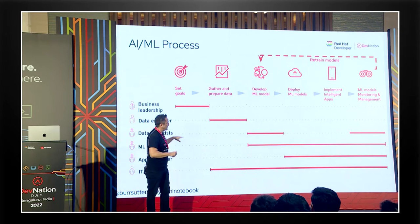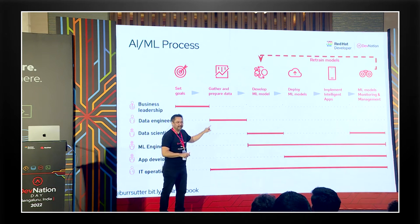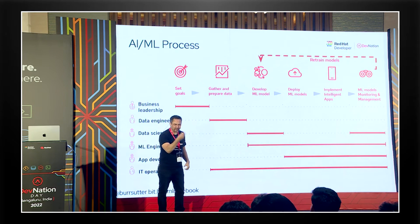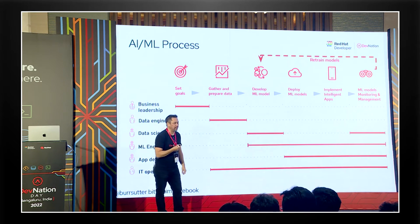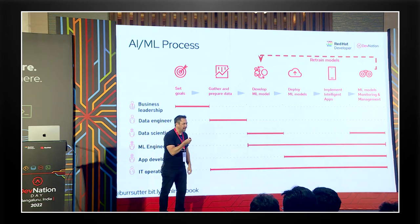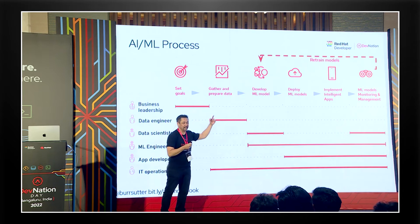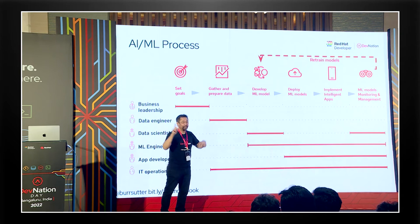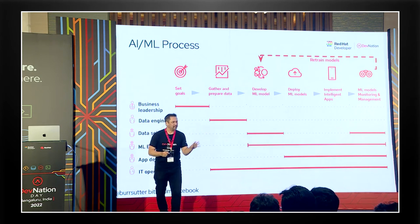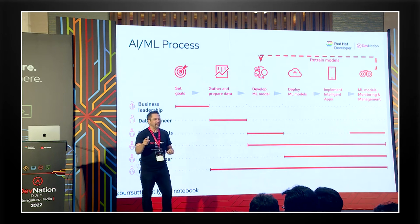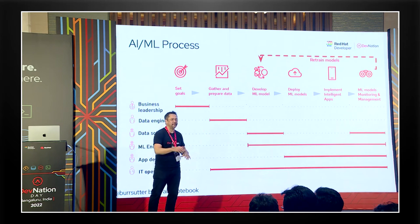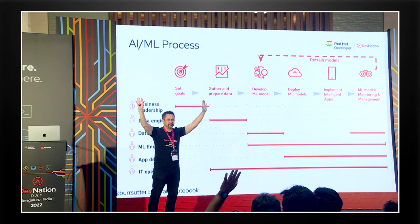Not the model itself - the model hasn't changed. Version 1.0 of the model is still the version 1.0 of the code. But the data set has slightly shifted over time, so you actually need to monitor the model in production - is it scoring more poorly? What you'll see when we show it to you is the difference between an AI/ML model and regular code. How many people here write code of some sort? A lot of you.